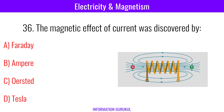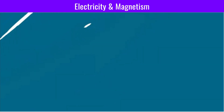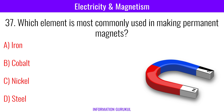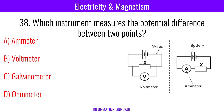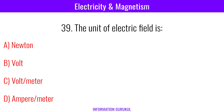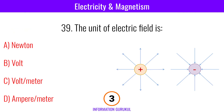The magnetic effect of current was discovered by Hans Christian Oersted. Which element is most commonly used in making permanent magnets? Cobalt. Which instrument measures the potential difference between two points? Voltmeter. The unit of electric field is volt per meter.